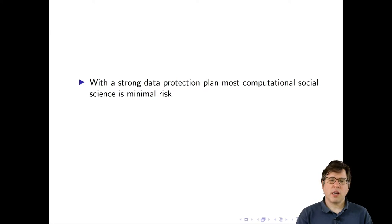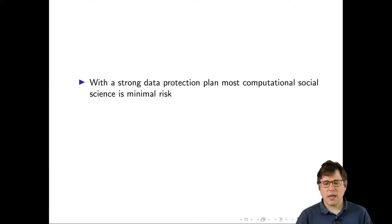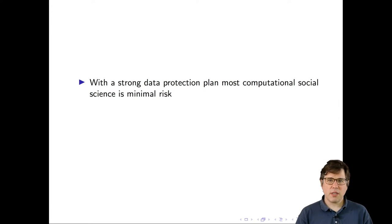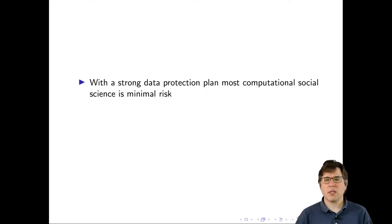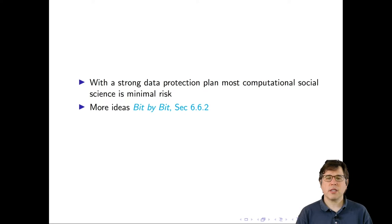With a strong data protection plan, most computational social science research is minimal risk, which is why having appropriate data protection plans is so important. Minimal risk means the amount of risk you're exposed to in your daily life — if a study puts people at more risk than they're normally exposed to, it should have a higher standard of oversight. There's more about informational risk and data protection plans in Bit by Bit section 6.6.2.